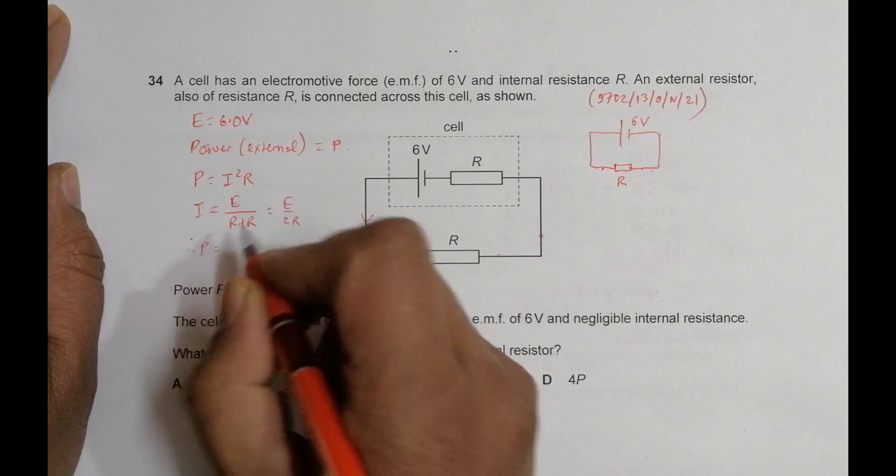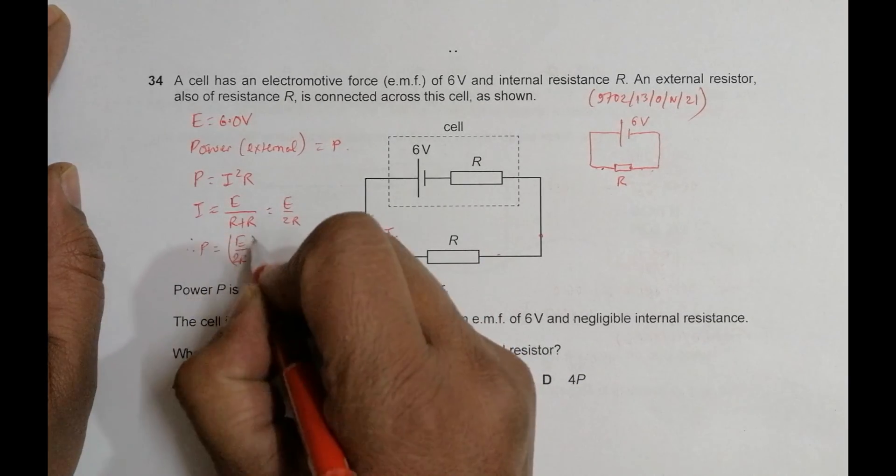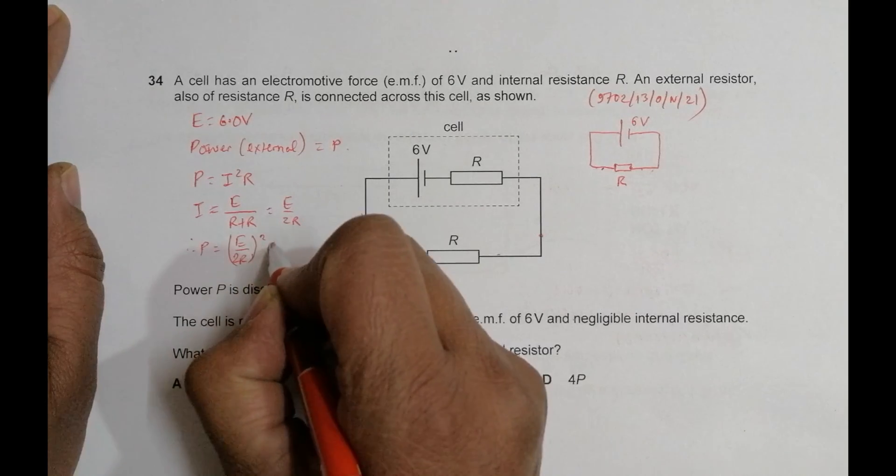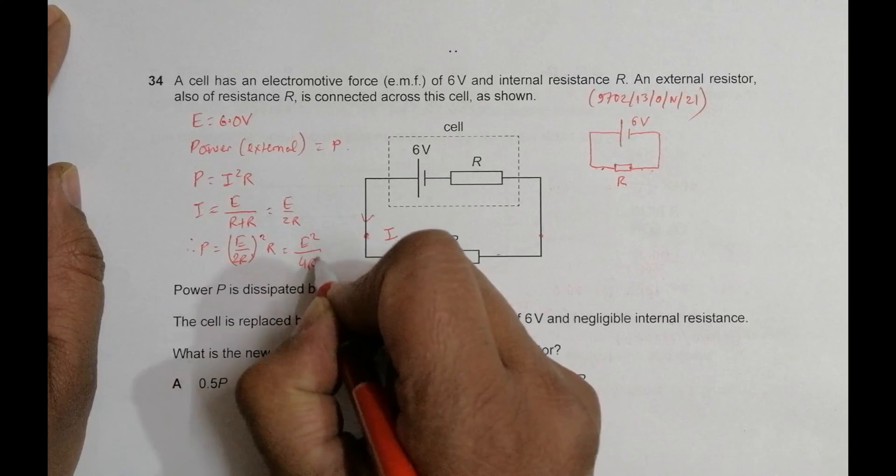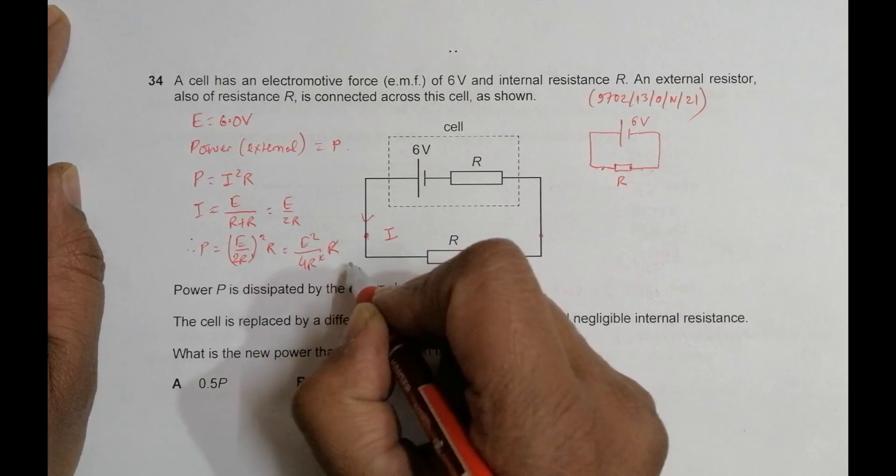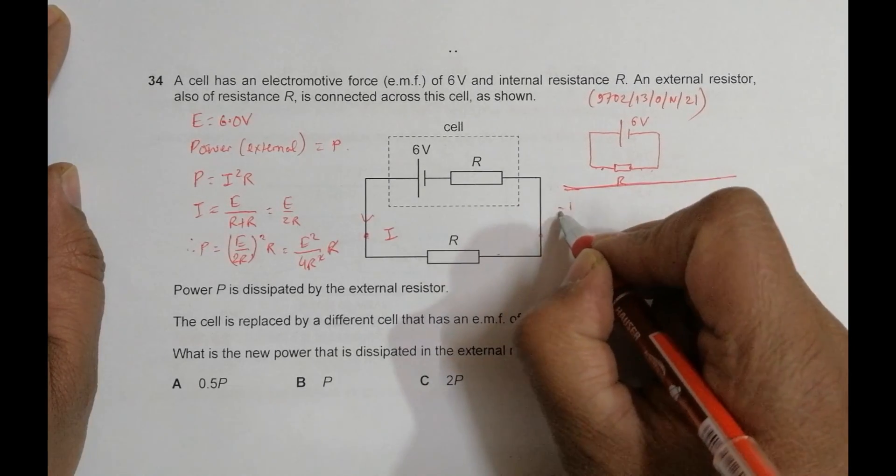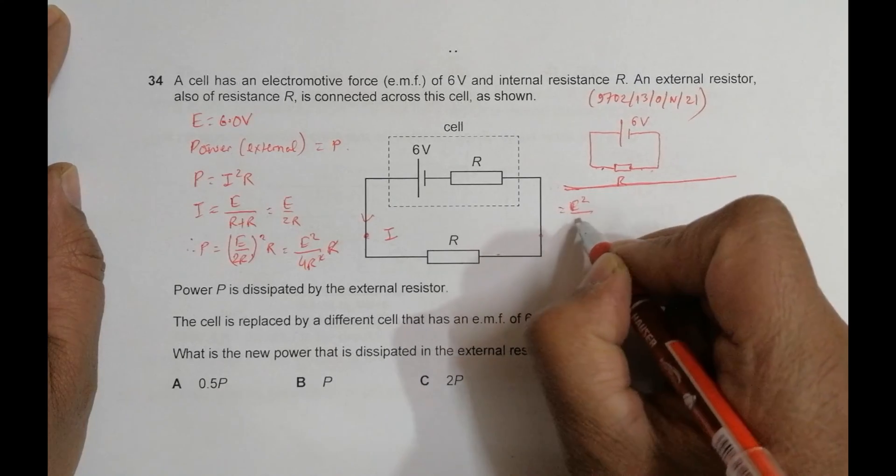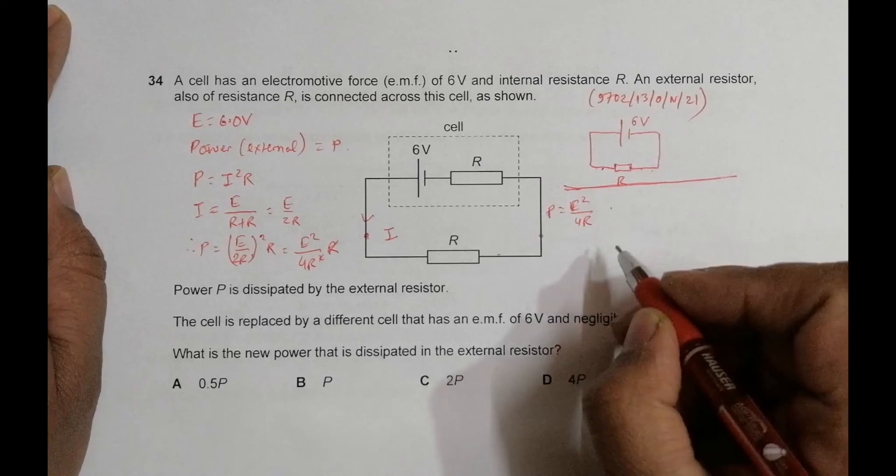Therefore, power P = (E/2R)² × R = E²/4R² × R = E²/4R. This is the old power.